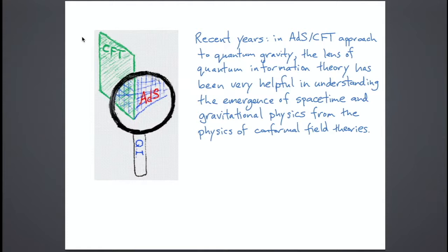I'm going to be talking about something motivated by developments in quantum gravity and the ADS-CFT correspondence. As many of you know, in recent years, in this approach to defining quantum gravity by using conformal field theories, where the gravitational physics somehow emerges from the physics of strongly coupled CFTs, people have been realizing that by looking at the CFT from the point of view of quantum information theory — asking about how various subsystems are entangled with other things — these kinds of questions seem to give a more direct window into the geometry of space-time encoded in CFT states and the gravitational physics there.